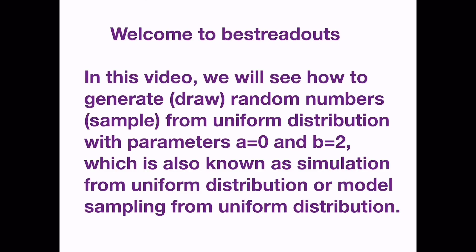Hello friends, welcome to Best Redouts. In this video, today we will see how to generate random numbers from uniform distribution with parameters a equals 0 and b equals 2, which is continuous uniform distribution. Now this generation of random numbers is also known as simulation or model sampling from uniform distribution.